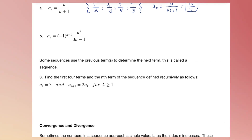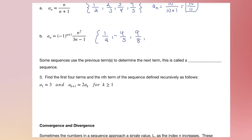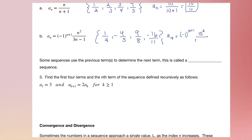Let's find the first four terms of this next sequence. Replacing every n with 1 gives positive 1/2. Replacing every n with 2 gives negative 4/5. Replacing every n with 3 gives positive 9/8. And replacing every n with 4 gives negative 16/11. For the 10th term, we replace every n with 10. Negative 1 is raised to an odd power, making it negative. 10 squared is 100, and 30 minus 1 is 29, so the answer is negative 100/29.